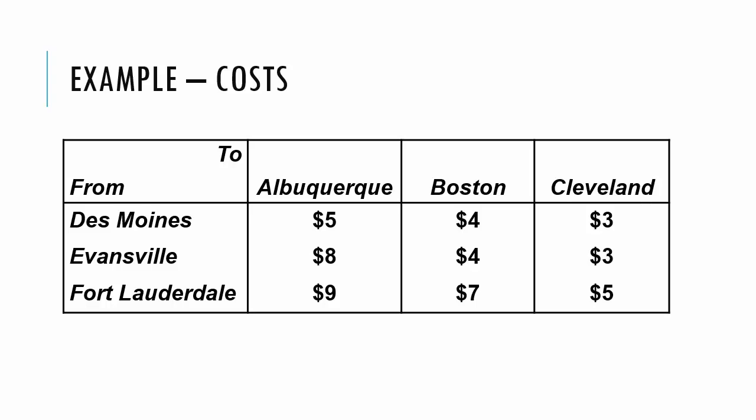It should be straightforward to write out the objective function. It is minimized total cost, which is simply the cost number shown here multiplied by their associated decision variables.